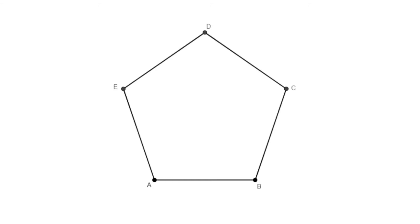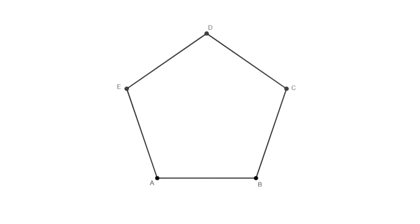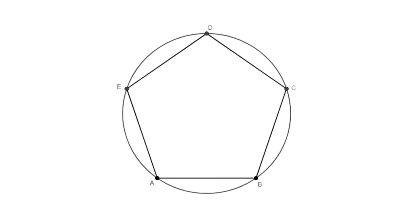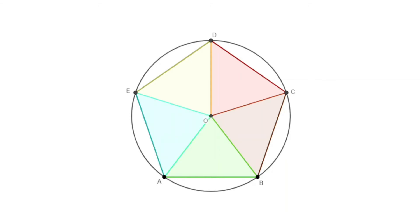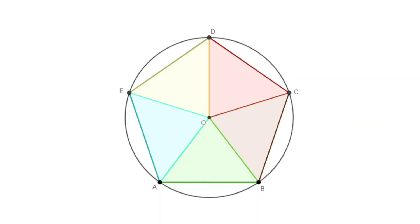So pentagon ABCDE is cyclic — a circle passes through all five vertices with center O. Drawing triangles from O to each pair of adjacent vertices, we can prove all five triangles are congruent to each other. Therefore the total area of the pentagon equals the area of one such triangle multiplied by five.